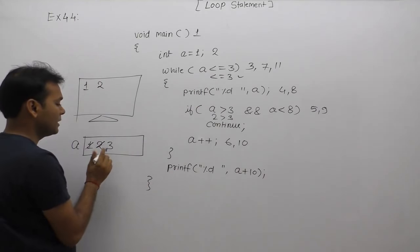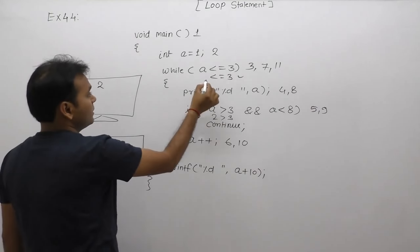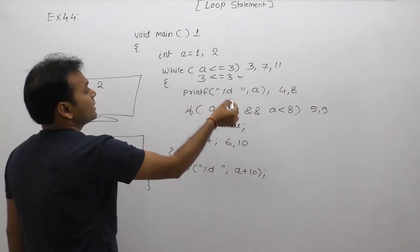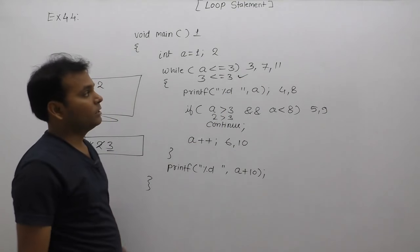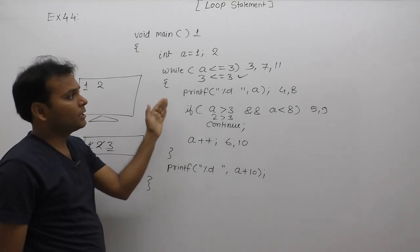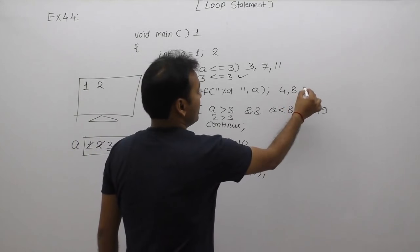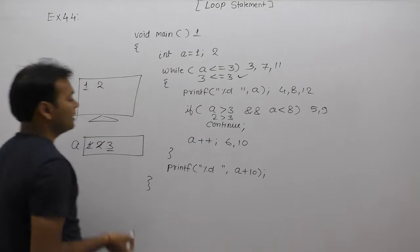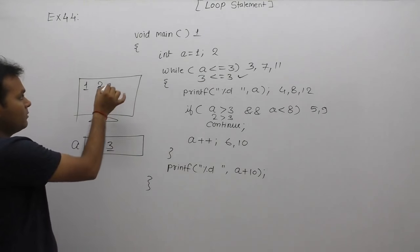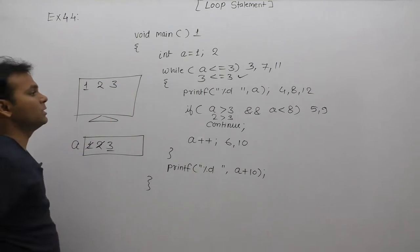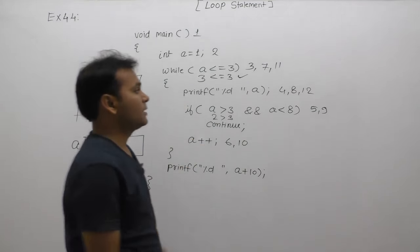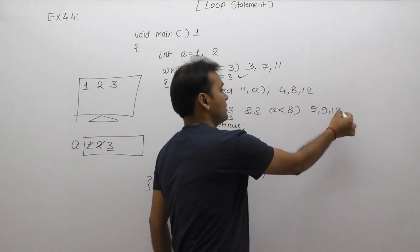While condition case: again we replace with the current value which is 3. 3 less than equals to 3, condition is again true. Then again control sends inside body. 12th statement case: display the value of a. Currently a's value is 3, so display 3. Next, condition testing, sequence is 13.